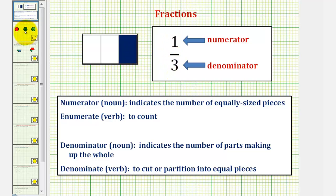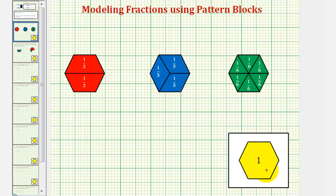When it comes to pattern blocks, if the yellow hexagon is one whole and we denominate or cut this into two equal pieces as we see here in red, each red pattern block would be equal to one half.